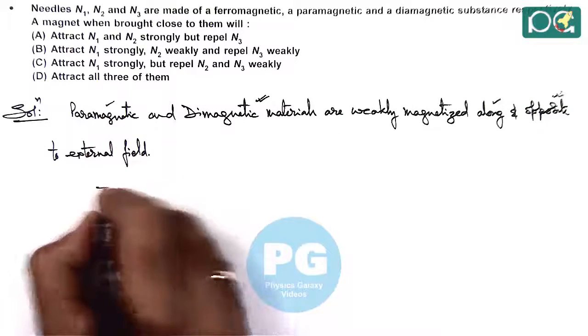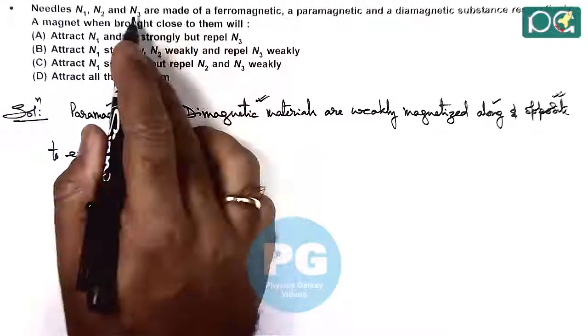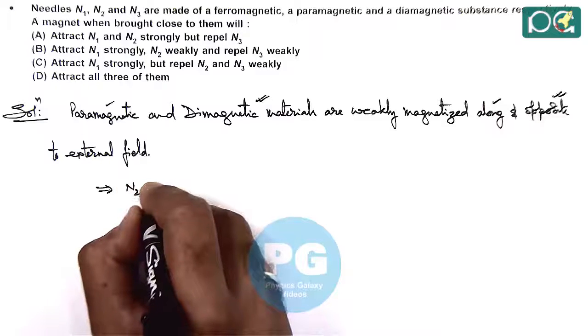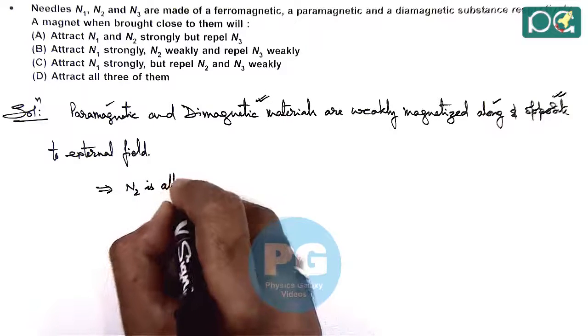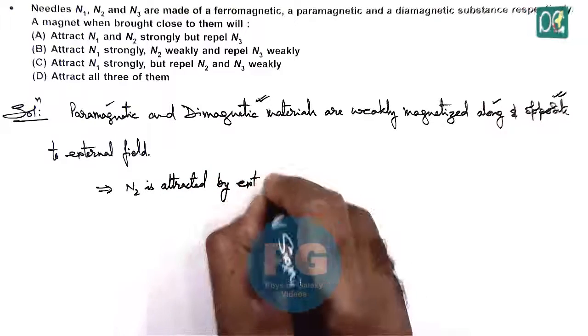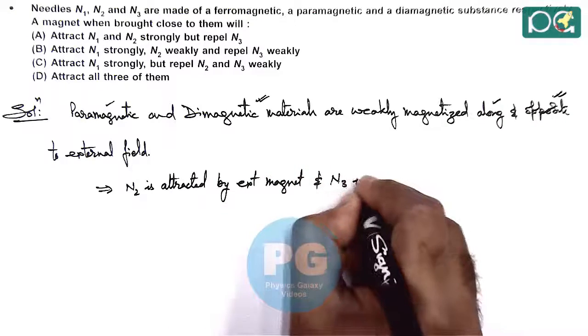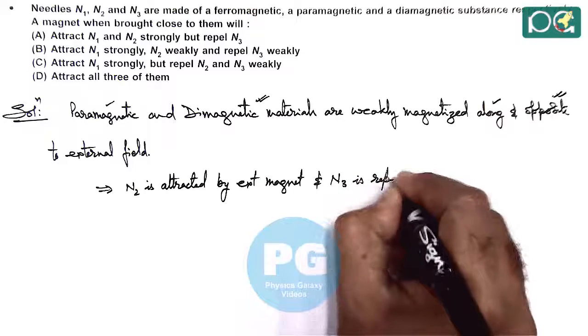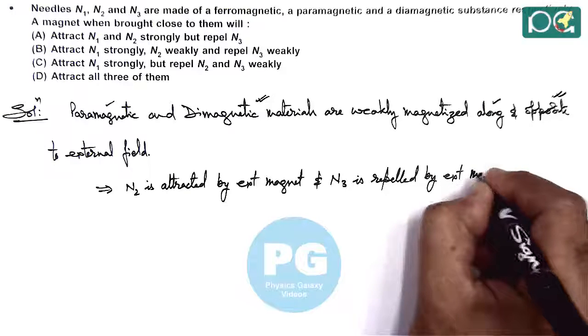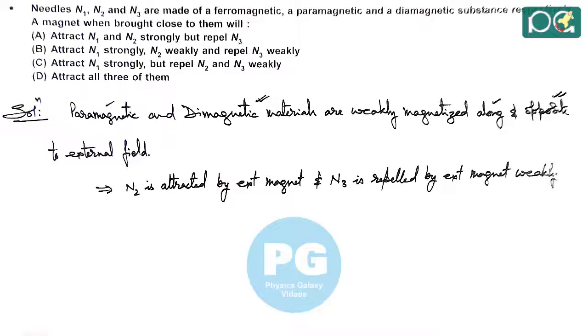So paramagnetic needle is N2 and diamagnetic needle is N3. This implies N2 is attracted by external magnetic field or external magnet, and N3 is repelled by external field or external magnet, weakly, because these are weakly magnetized.